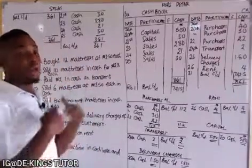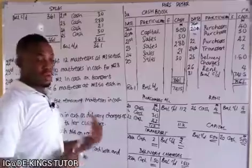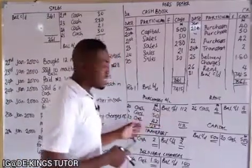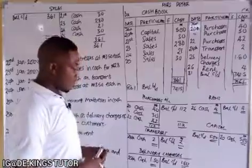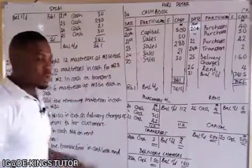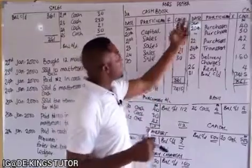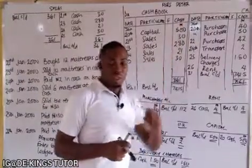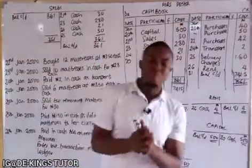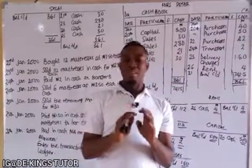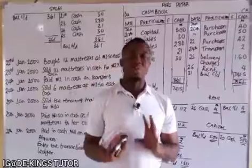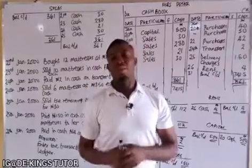This is how to prepare the single column cash book. If you notice, it has a single column only for cash — that is what we call a single column cash book. Thank you very much. Please like, comment, and share this video, and if you have not subscribed, please subscribe. Thank you very much.